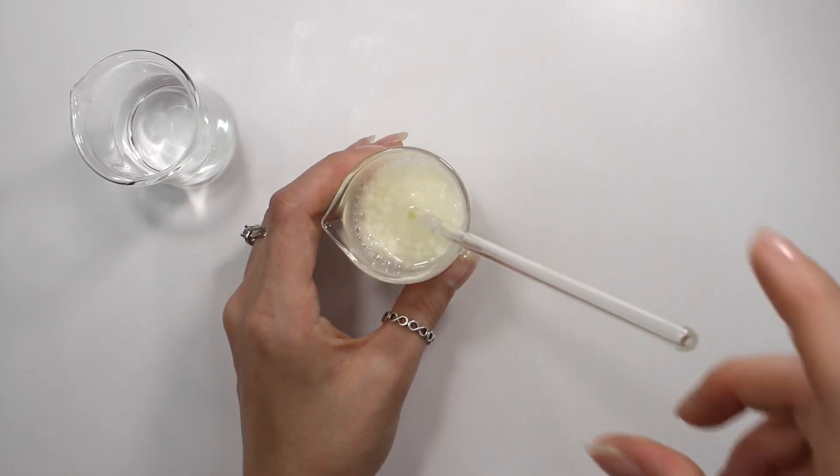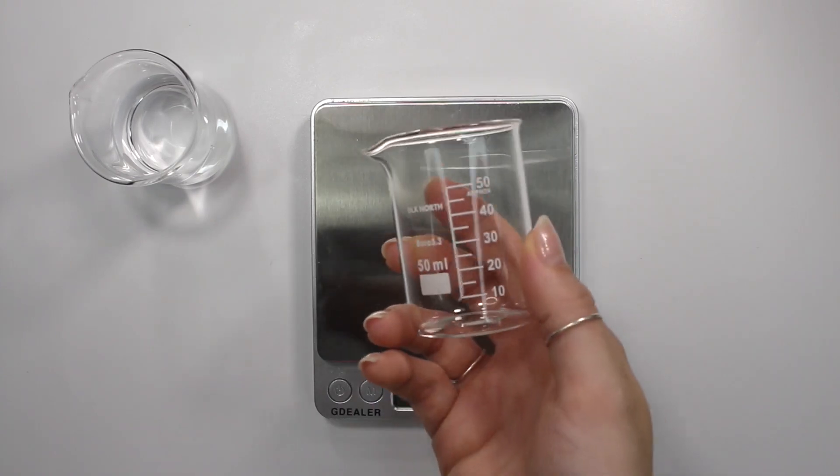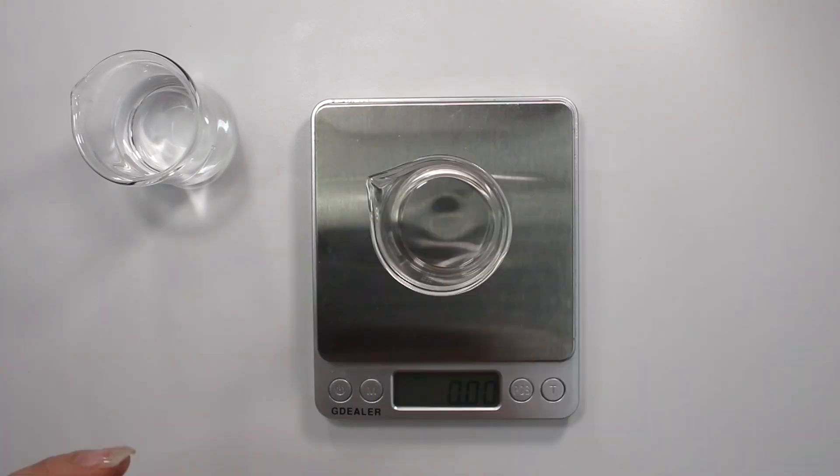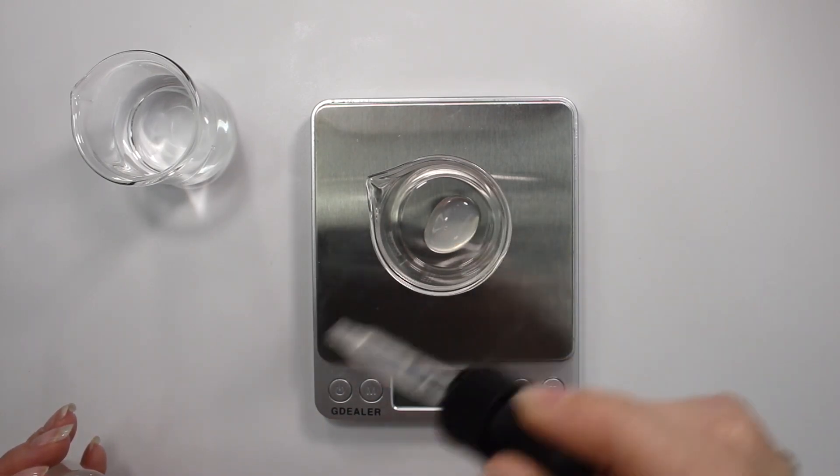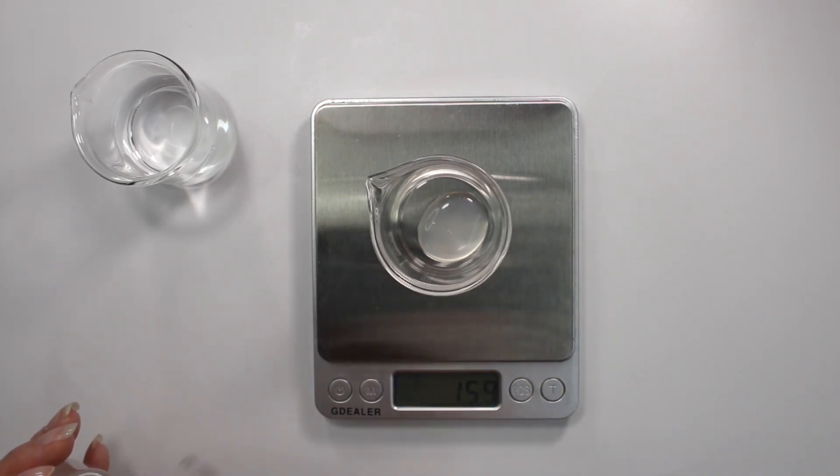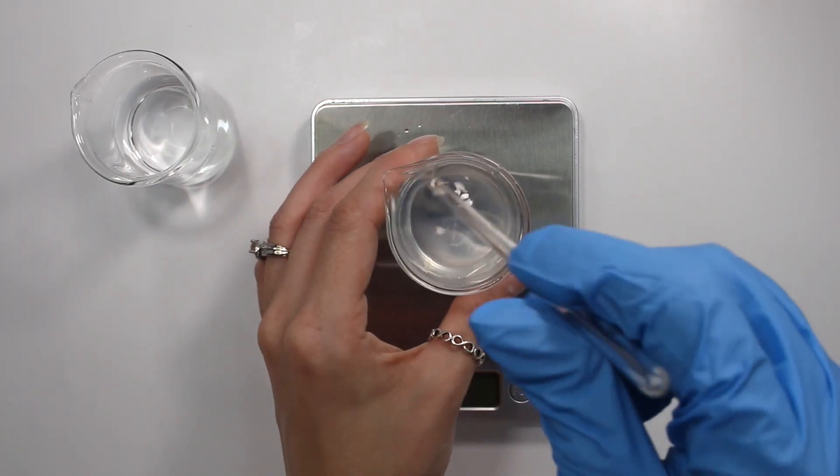So while that is dissolving in the water, I'm going to go ahead and weigh out my serum. And I'm just using a 50 milliliter glass beaker here. I used a 50 milliliter glass beaker for the last one as well. I'm weighing out 10% of my serum and then 90% distilled water and then just mixing that in until it's dissolved.